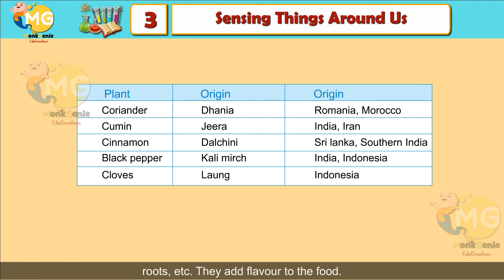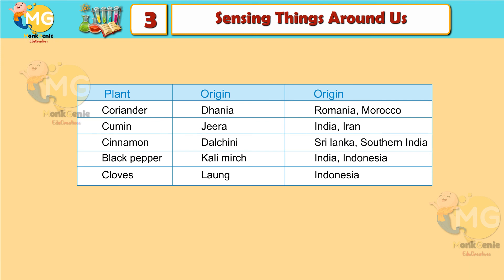Spices are obtained from plant parts like buds, seeds, flowers, leaves, bark, roots, etc. They add flavor to food. Some spices, their Indian names and origins: coriander (dhania) — Romania/Morocco; cumin (jeera) — India; cinnamon (dal chini) — Sri Lanka and Southern India; black pepper (kali mirch) — India and Indonesia; cloves — Indonesia.